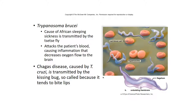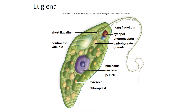Chagas disease is caused by Trypanosoma cruzi. It tends to bite the lips of humans, so it's called the kissing bug, and it's also transmitted through bed bugs. Chagas disease kills victims later through sudden heart disease or digestive failure, so it can stay in your body for a long time. Both African sleeping sickness and Chagas disease tend to be very deadly if untreated. Here's a harmless euglena — you can find it in pond water. It has a long flagellum, a nucleus, nucleolus, vacuoles, and chloroplasts — many of the same organelles that more sophisticated organisms like plants and animals have.